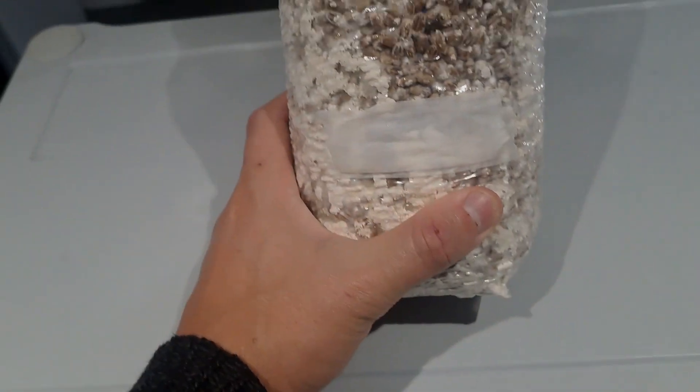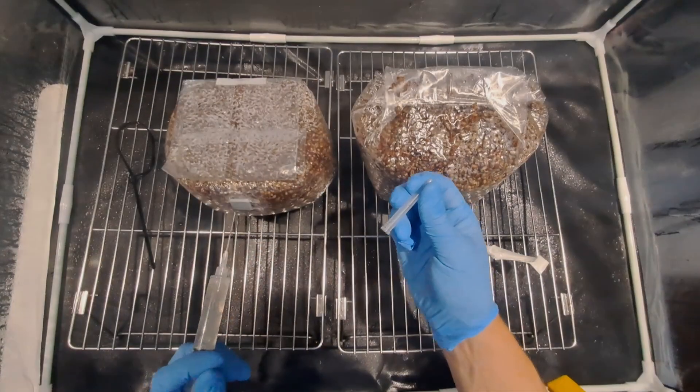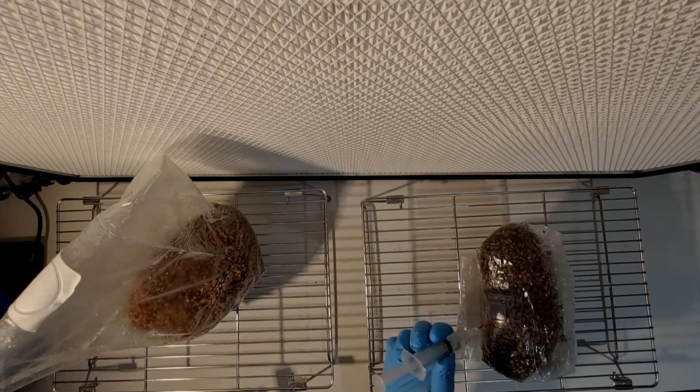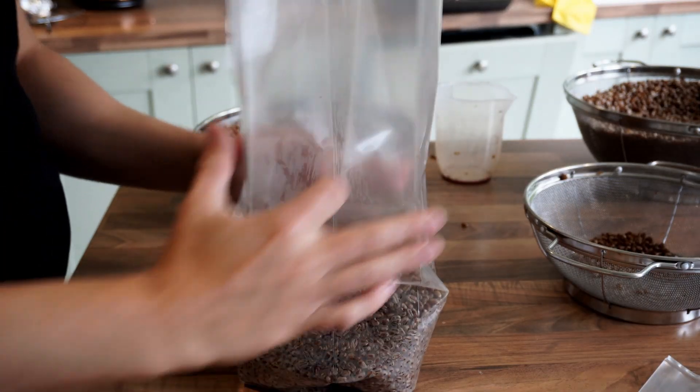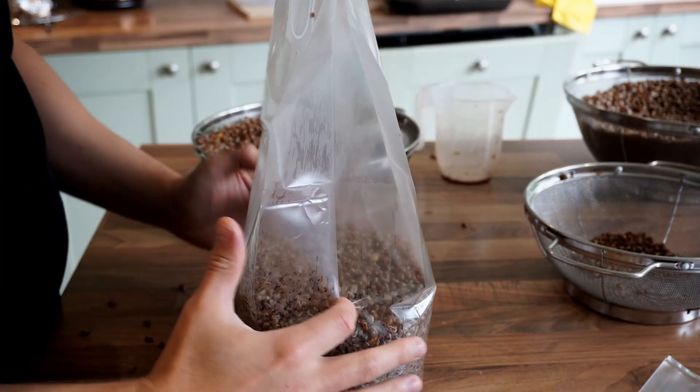In this video I'm going to show you how to inoculate grain bags inside a still air box and also in front of a flow hood. I'm quickly just going to discuss how you prepare your bags for sterilization in the pressure cooker.